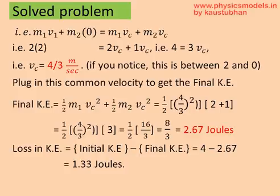So we have found most of the answers. The important thing is the loss in kinetic energy. We started with 4 joules of the blue block and landed with 2.67 joules of both the blocks put together. So where did the loss go? The loss is 4 minus 2.67 equal to 1.33, and that has gone into the spring.